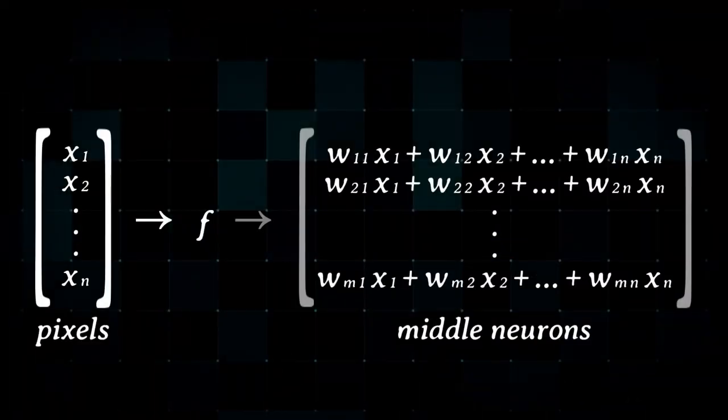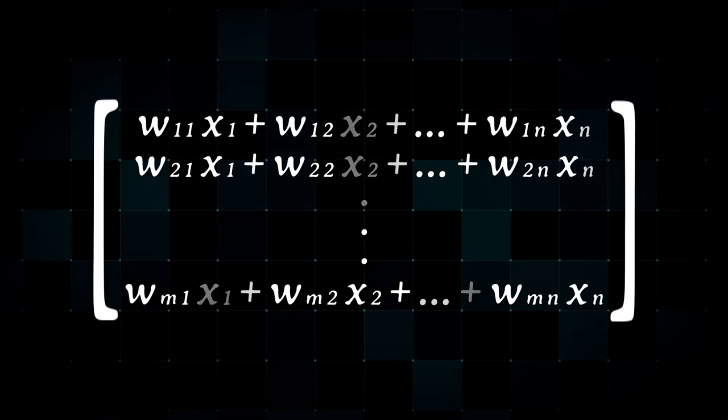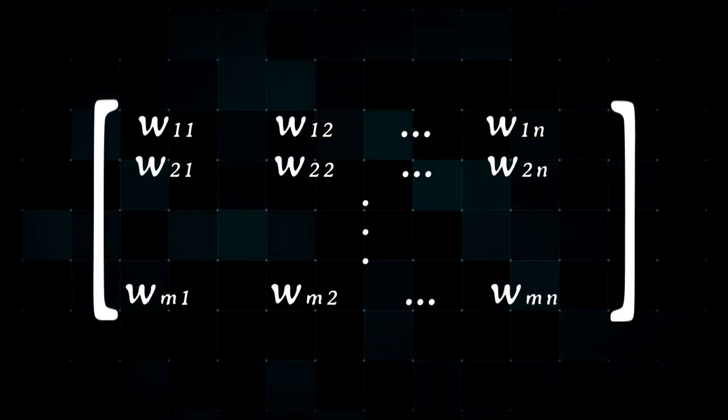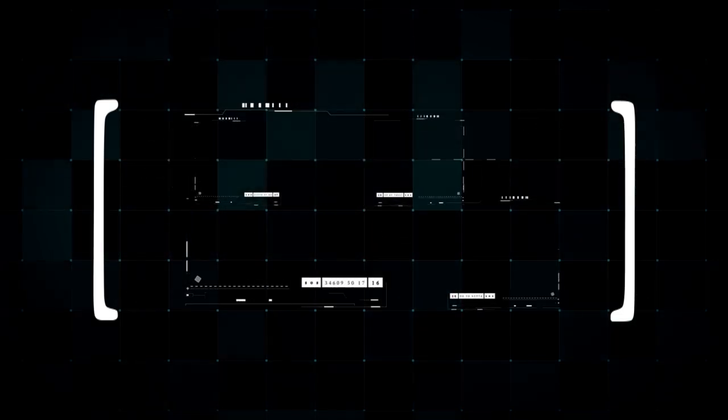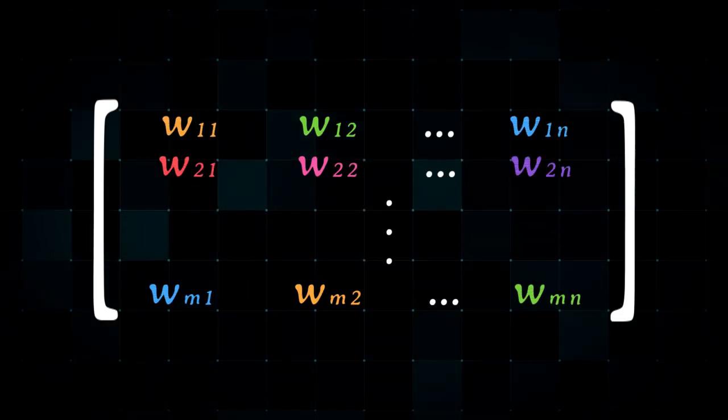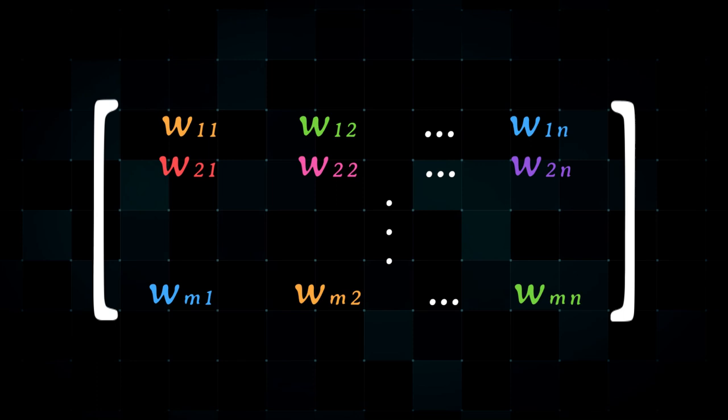Now, images usually have a little more pixels, but the problem's the same — namely, how do we figure out the correct functions? We know our functions look like this: a bunch of numbers each multiplying one variable. These are randomly generated at first, but need to be adjusted to give us correct answers.